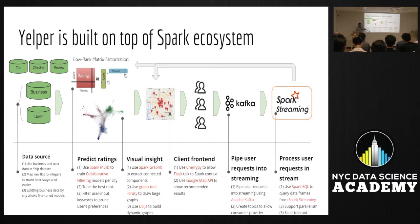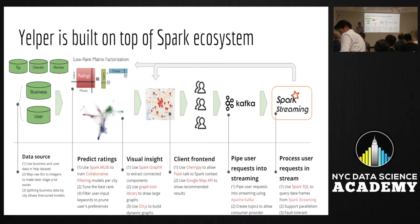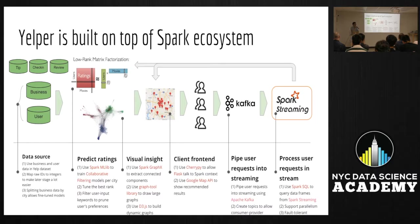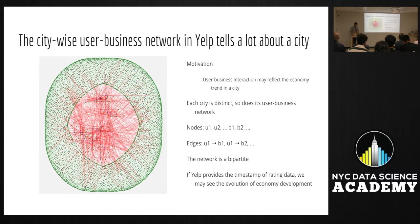We tried graph visualization using Spark GraphX and D3. Then we have a UI using the Google Maps API which can respond to user requests and return highly rated recommendations. Since we may have hundreds of millions of users flooding into the service, that's why we use Kafka — it's currently an industry standard for handling many requests. We use Spark Streaming at the end, and eventually you can form a loop.